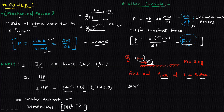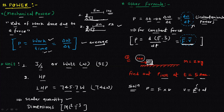To calculate instantaneous power at t = 5 seconds, we apply Power = force × velocity. Force is constant at 10 newtons. To find velocity, we use v = u + at. The initial velocity is zero (not given). We need acceleration, which we can calculate as a = F/m = 10/2 = 5 m/s².